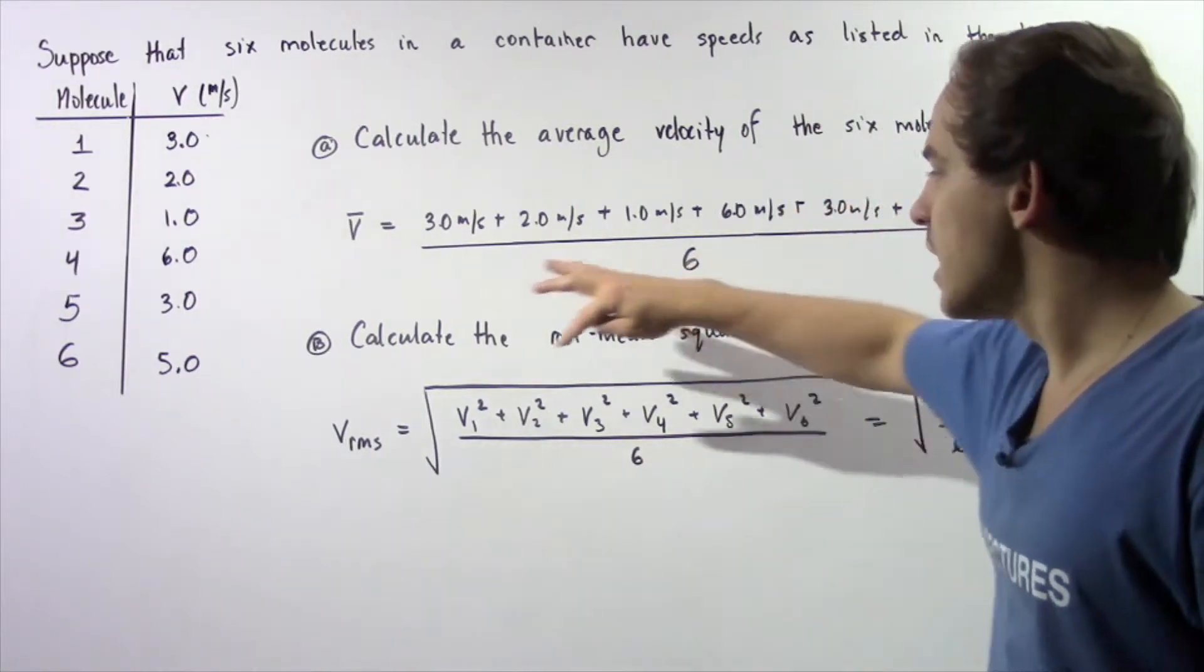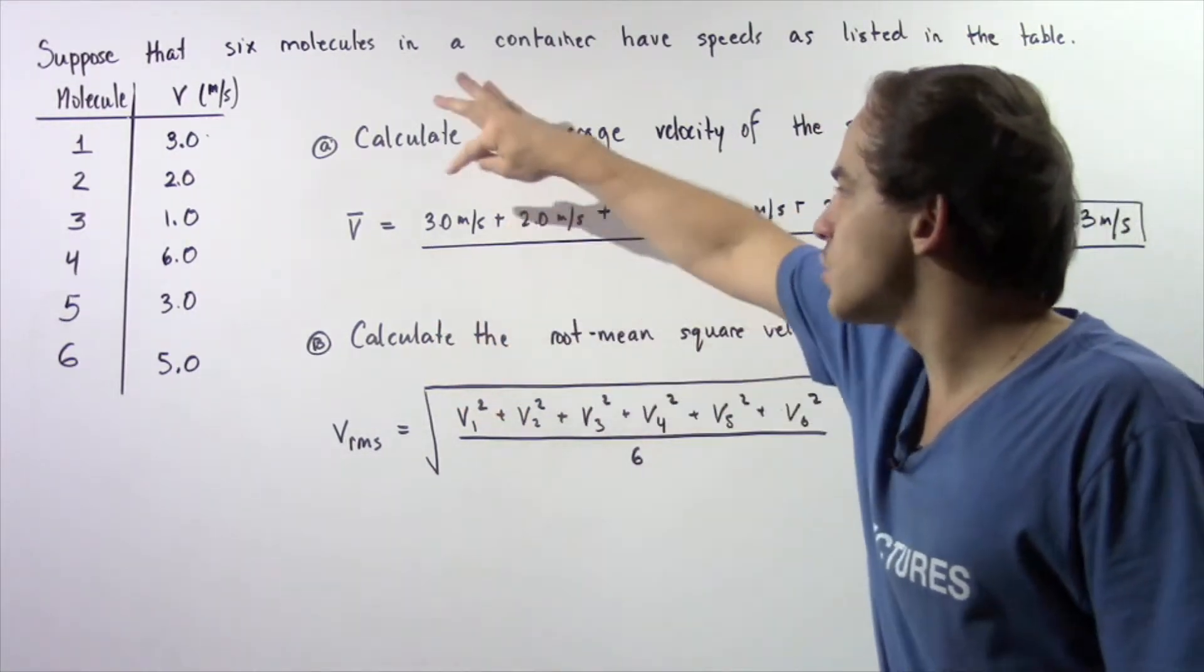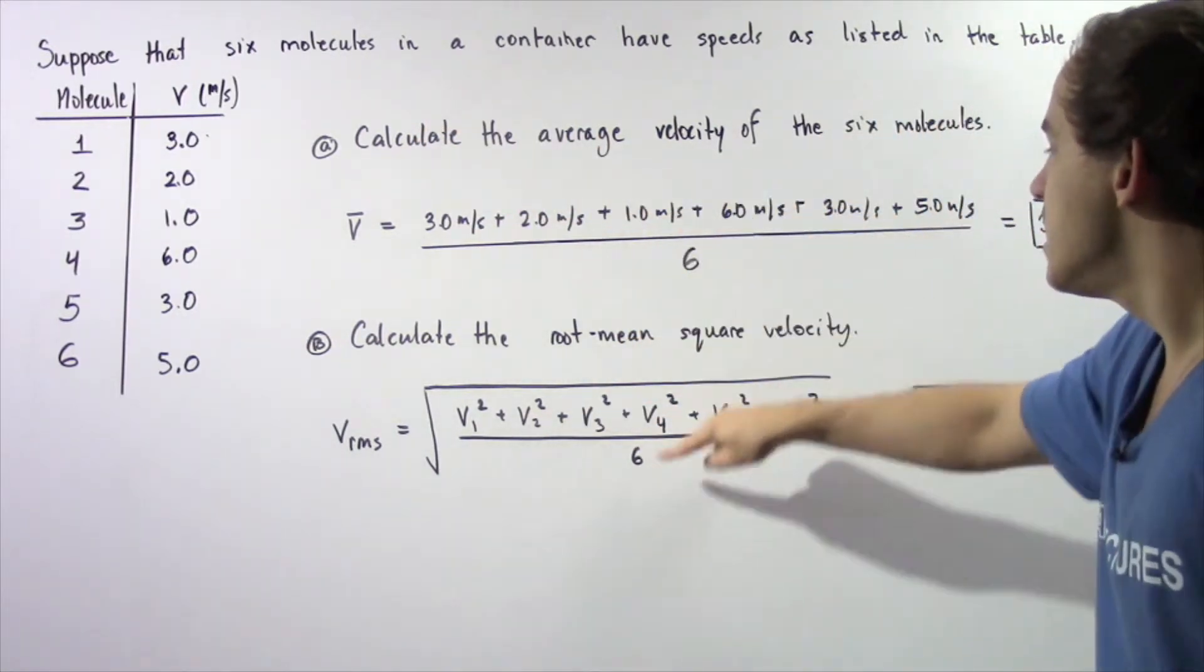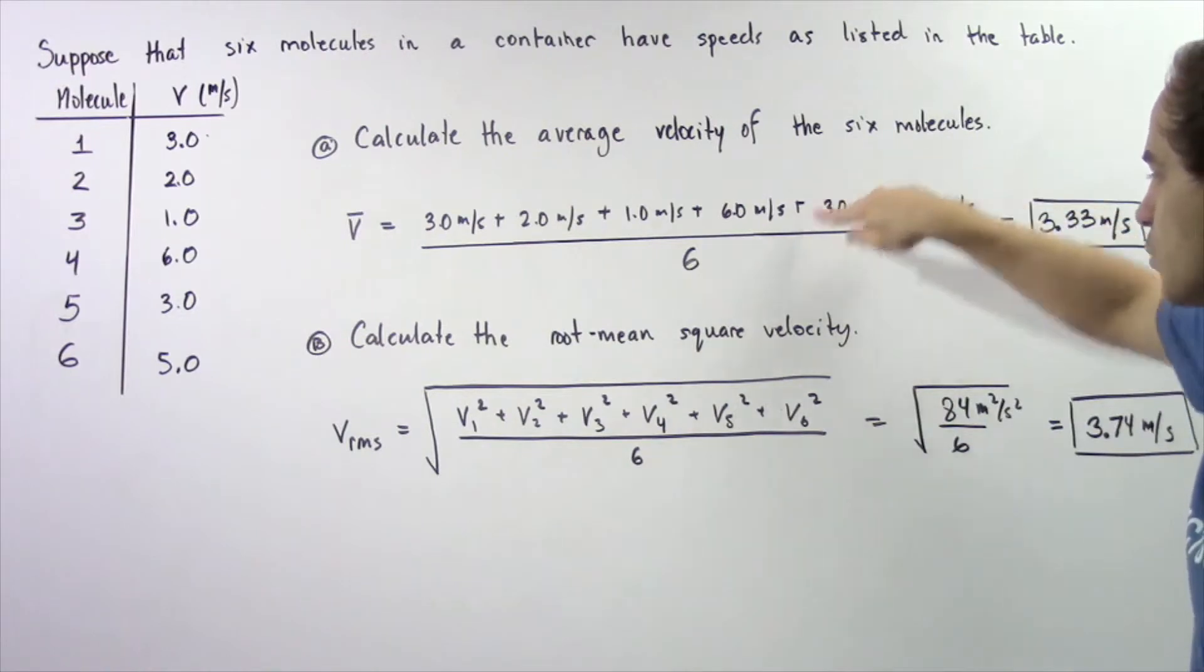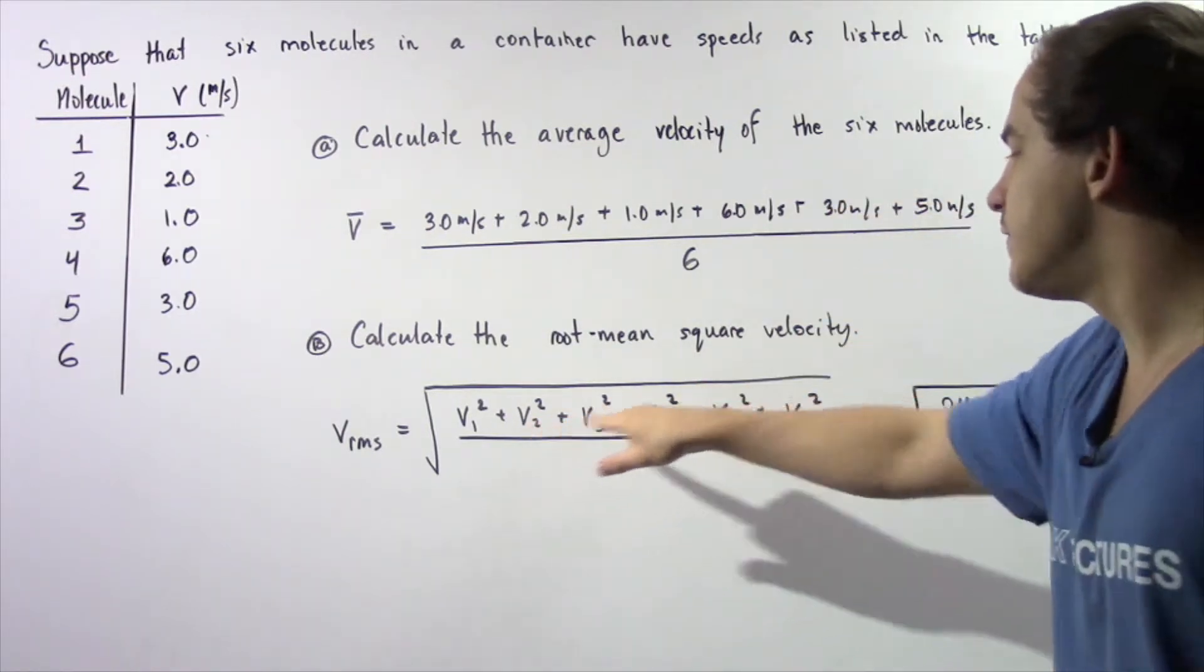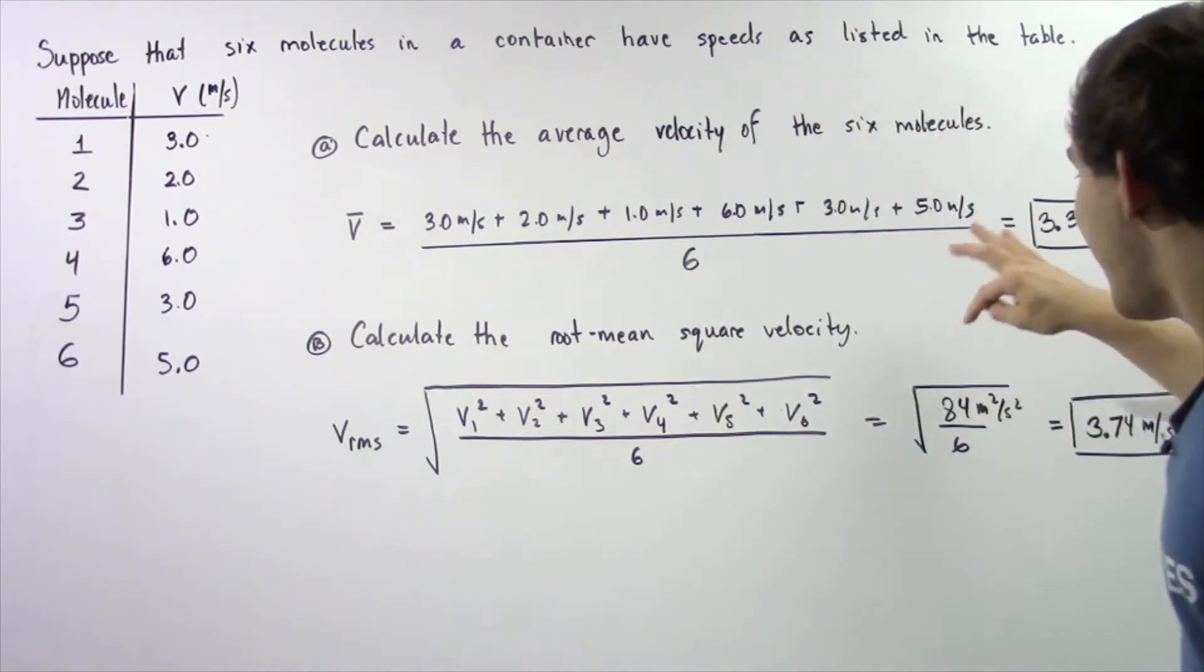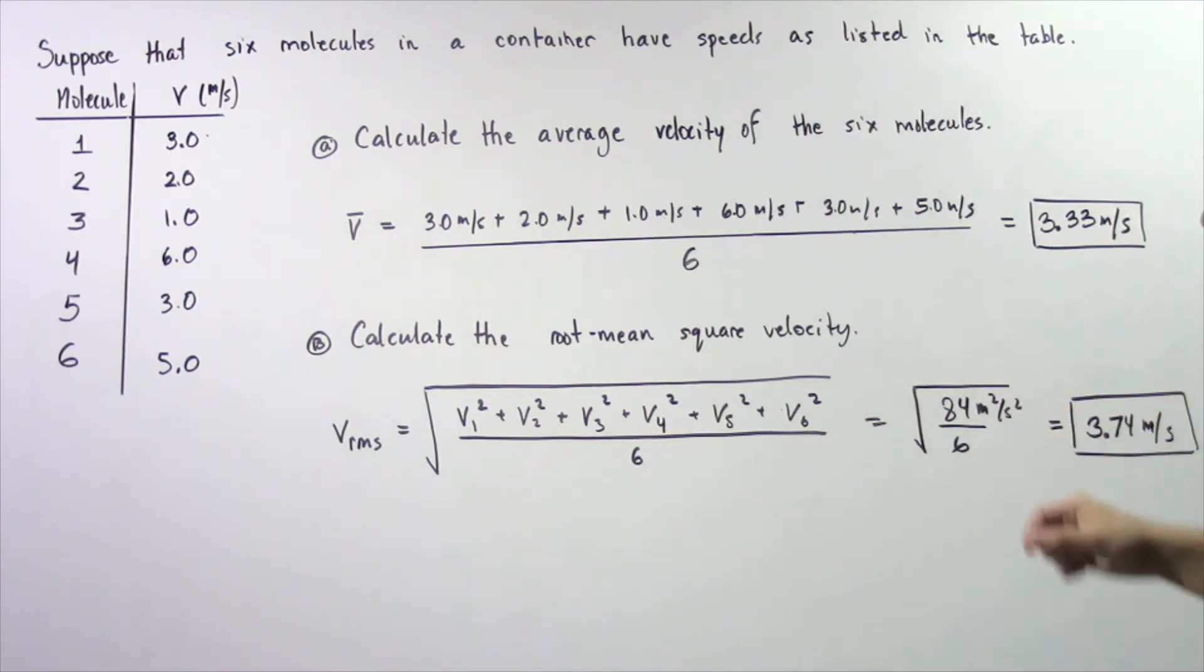once again six. So V1 squared: 3 squared plus 2 squared plus 1 squared plus 6 squared plus 3 squared plus 5 squared, divide that by 6 and take the square root. So 84 divided by 6, which gives us 14. We take the square root of 14 meters squared per second squared and that gives us about 3.74 meters per second.